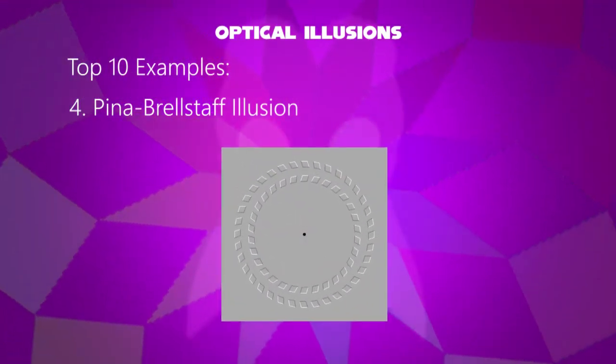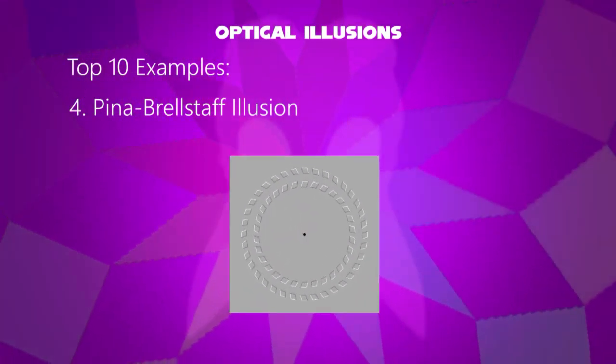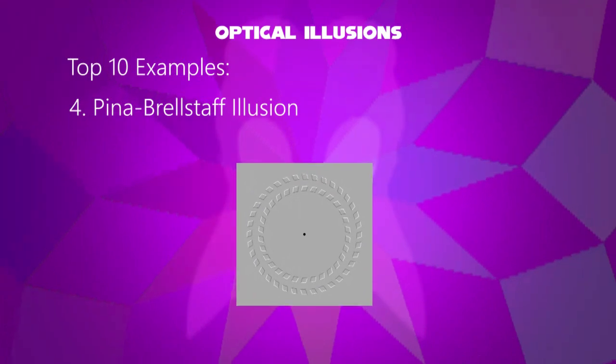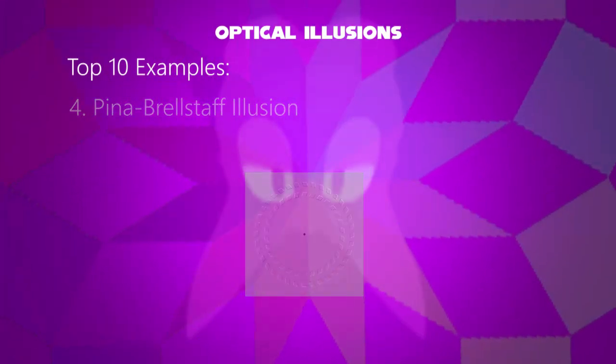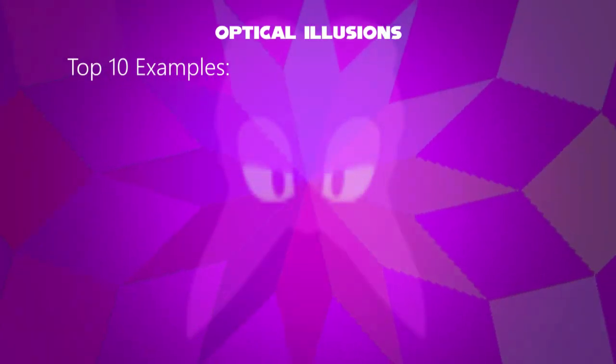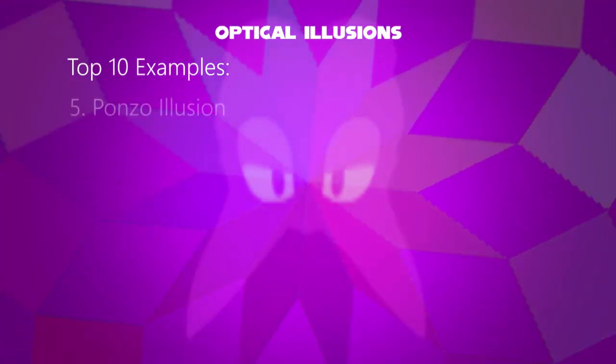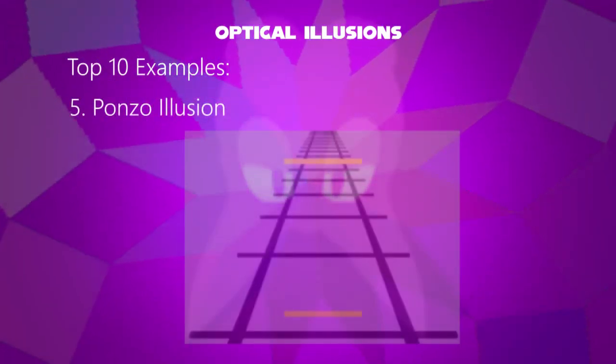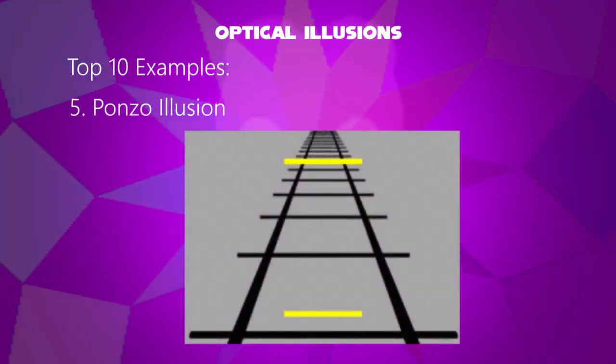Fourth example: the Pinna-Brelstaff illusion. Two circles seem to move when the viewer's head is moving forwards and backwards while looking at the black dot.